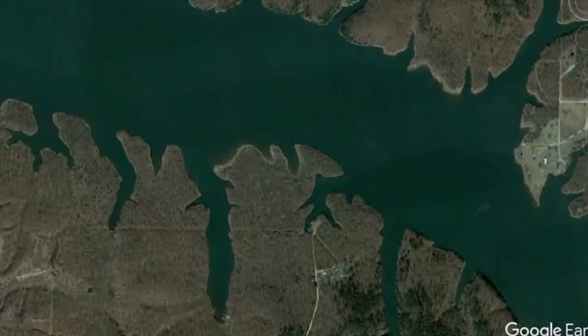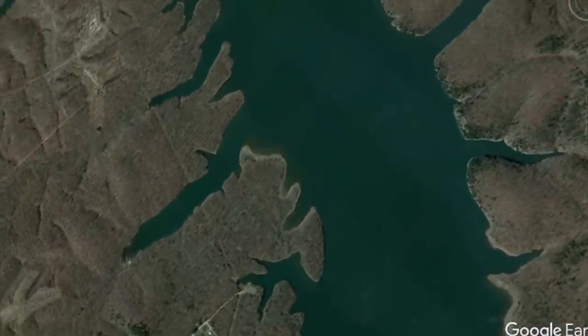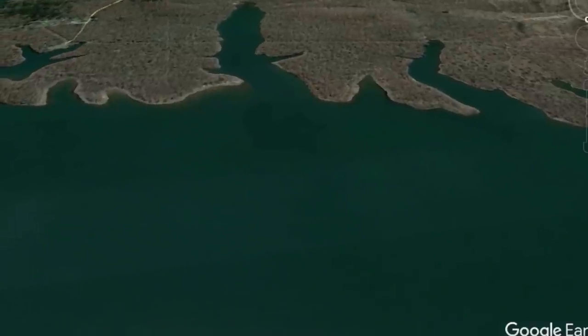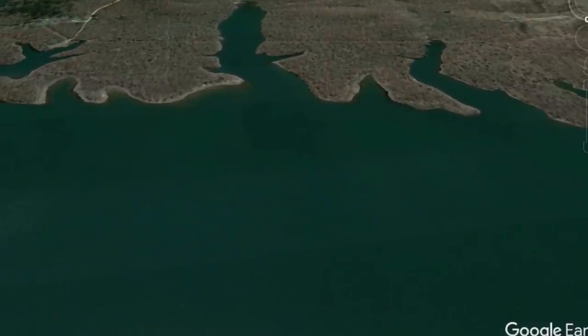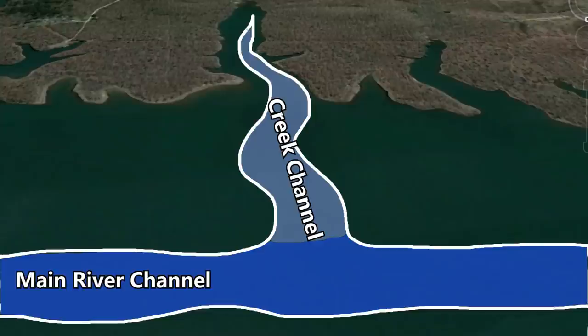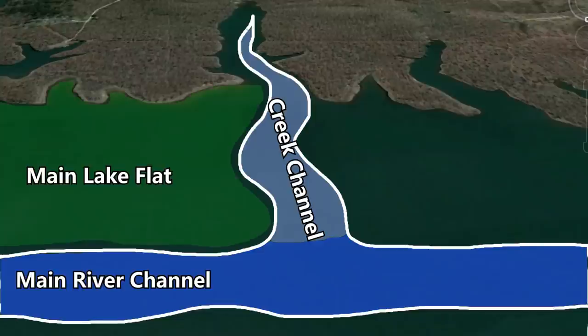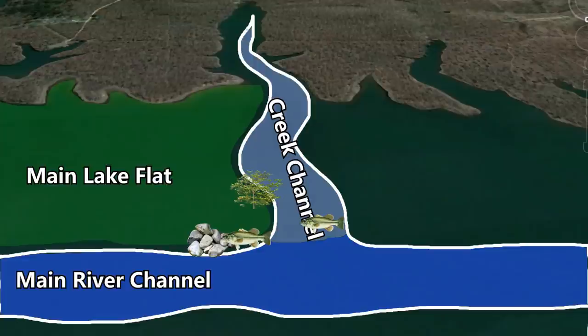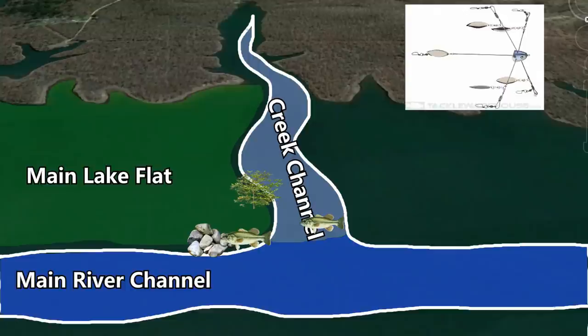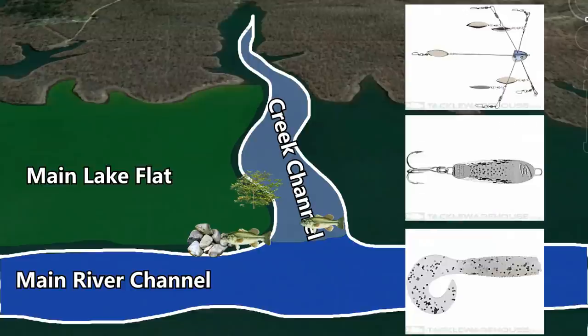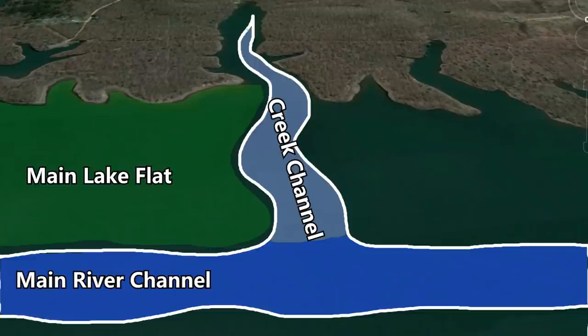Now let's look at how to use creek channels through the four seasons to find and catch more bass. In winter, I start by looking for areas where the main river channel and a creek channel meet. A lot of bass like to sit on the edge of big main lake flats — either suspending over the creek channel or sitting right on the break where the flat meets the channel, near rocks, brush piles, or suspended over trees. I target these fish with an umbrella rig, jigging spoon, or grub worked really slowly in deep water — you can get your biggest fish of the year doing this.